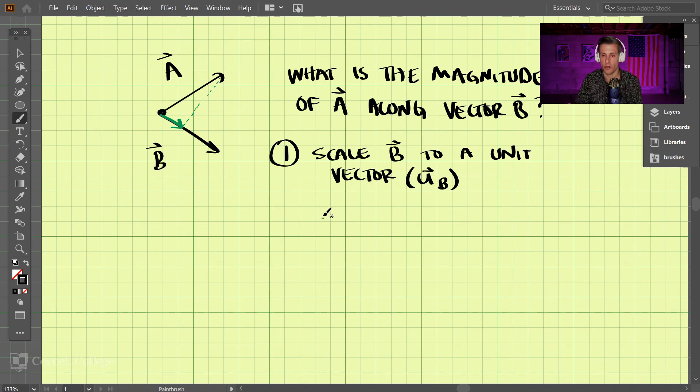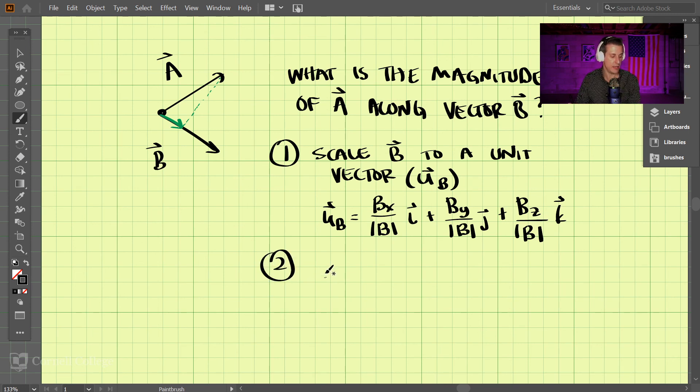So uB is each component of B divided by the magnitude of B.